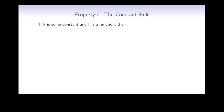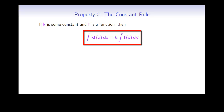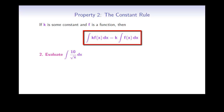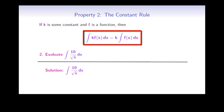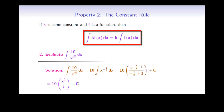Here's the next property, called the constant rule. If k is some constant and f is a function, then the indefinite integral of k times f is equal to k times the indefinite integral of f of x. For example, to evaluate the indefinite integral of 10 divided by the square root of x dx, we take out the constant 10 in front of the integral, then use the power rule — increase the exponent by 1 and divide by the new exponent — and simplify to get 20 times the square root of x plus C.